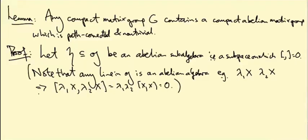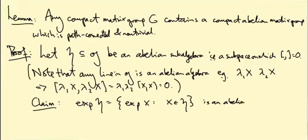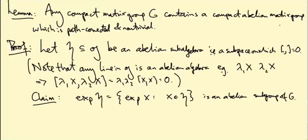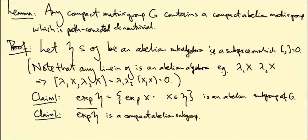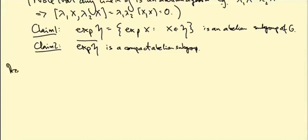The proof we're going to give will work for any abelian subalgebra, but there is at least one. So how are we going to use this abelian subalgebra to produce an abelian subgroup? We're just going to exponentiate it. So here's the claim: exp of little h, that is the set of all exp(X)'s with X in little h, this is an abelian subgroup of G. What we want is a compact abelian subgroup. This is not necessarily compact, so claim two is that if we take the topological closure of this guy, this is a compact abelian subgroup.